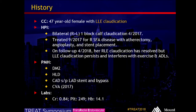We have a 47-year-old female with left lower extremity claudication. She has a history of bilateral, one-block calf claudication, which was worked up last year. She was actually treated already for her right SFA disease with atherectomy, angioplasty, and stent placement late last year.